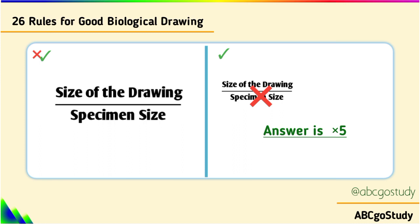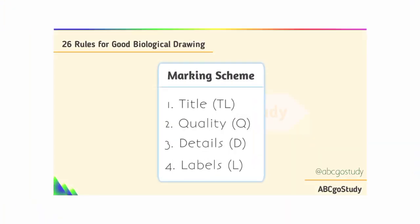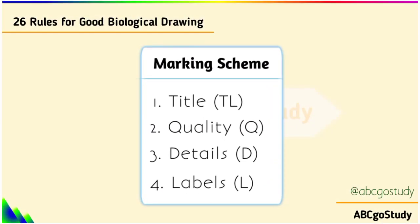A good examiner tests four things in a biological drawing: number one, title; two, quality; three, details; four, labels. We'll talk about this in detail before the end of this video. But before then, let me walk you through the biological drawing procedures.